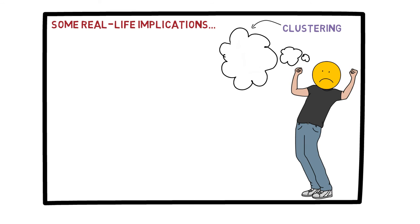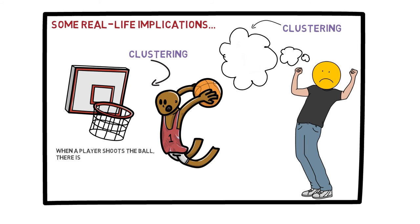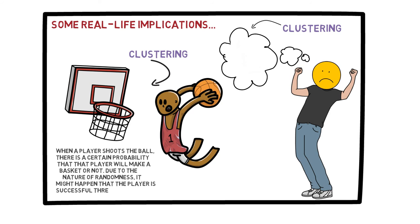The same issue could happen in basketball, for example. A player may have what is called a hot hand, which means the player has been making a lot of their shots successfully at a specific point in the game. Then other players start passing the ball to this person because they appear to be on a roll. This, again, is a fallacy — because when a player shoots the ball, there is a certain probability that the player will make a basket or not. Due to the nature of randomness, it might happen that the player is successful three times in a row, but it does not mean the player is more skilled at this particular time. It is simply randomness at work.